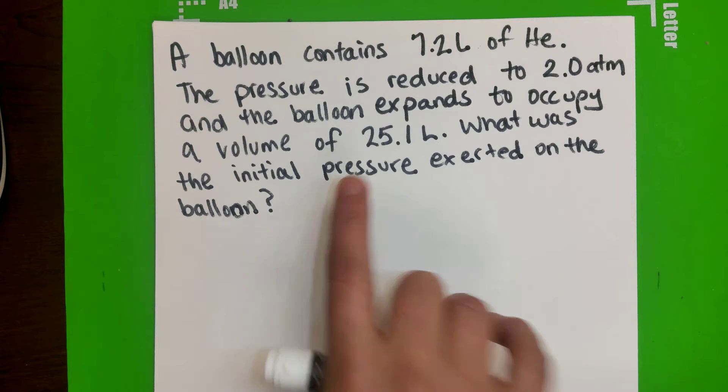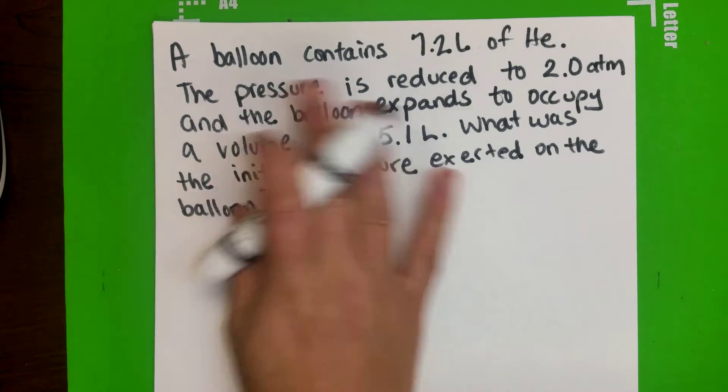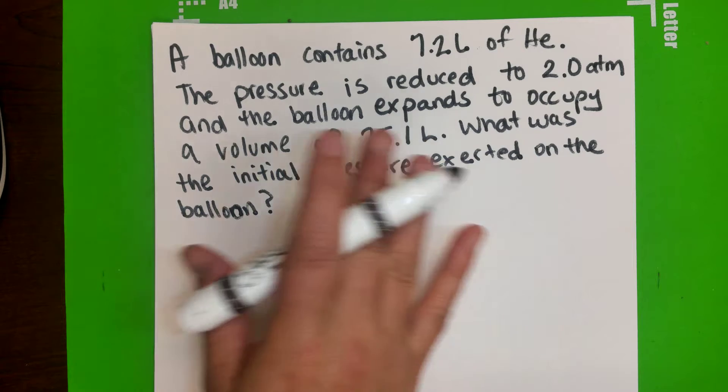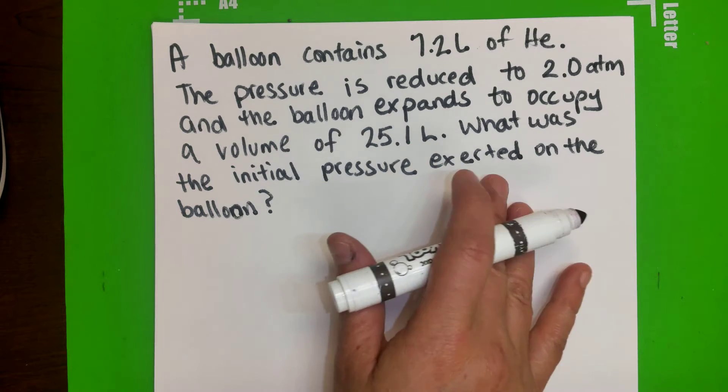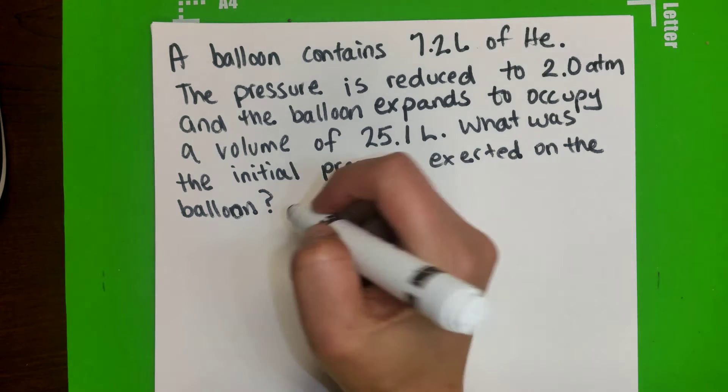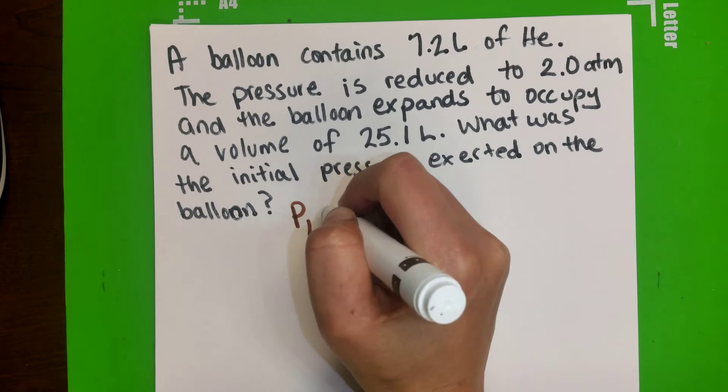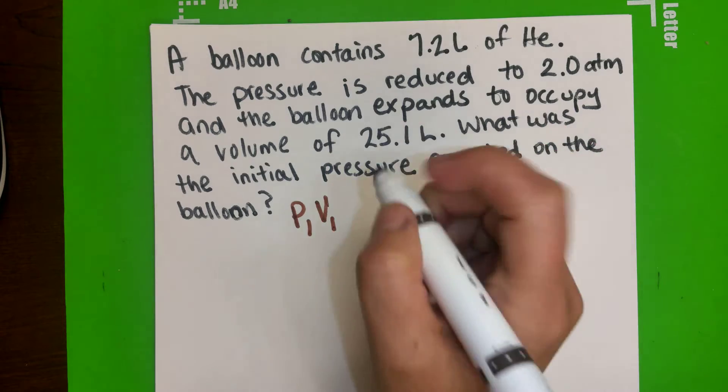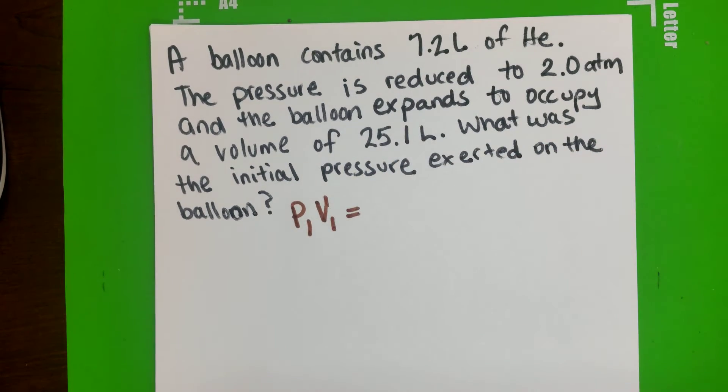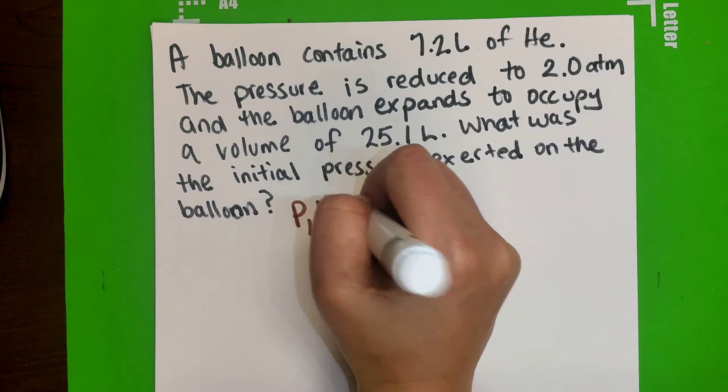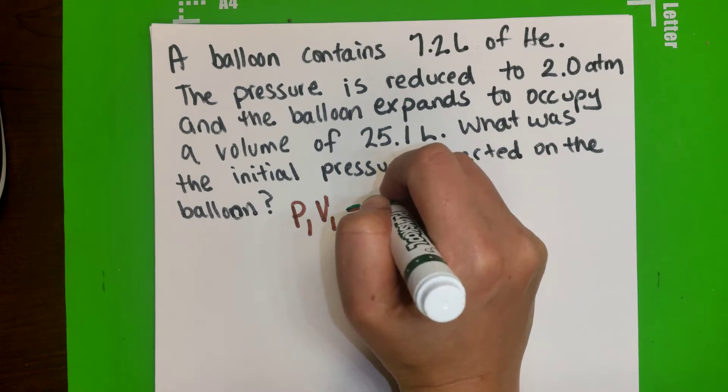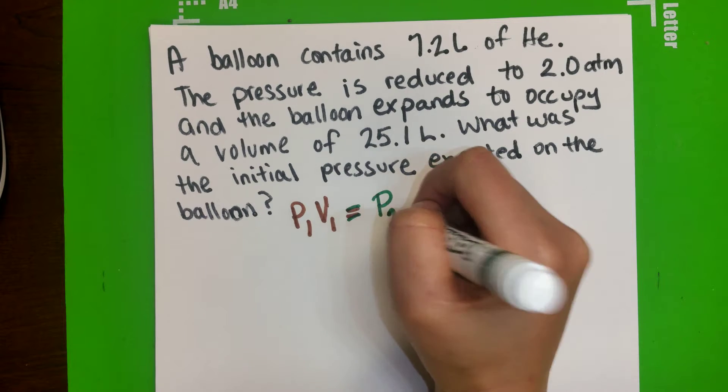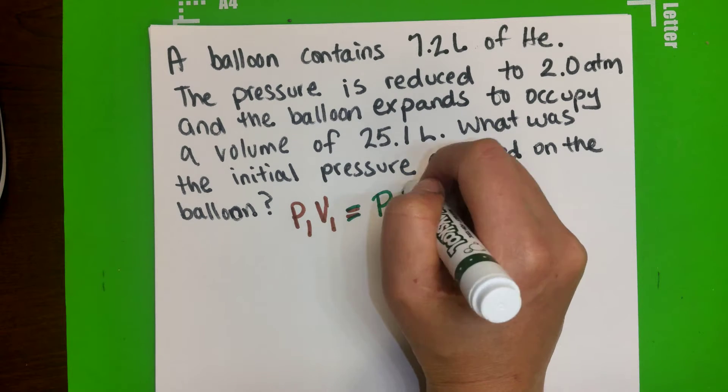Now in here we need to understand which is your P1 and your V1 and P2 and V2. So let me show you the equation. P1 times V, the volume, the initial volume, will equal to the final pressure, which is P2, and the final volume.